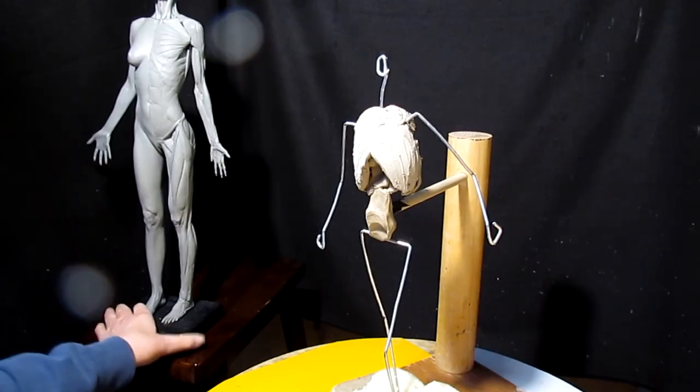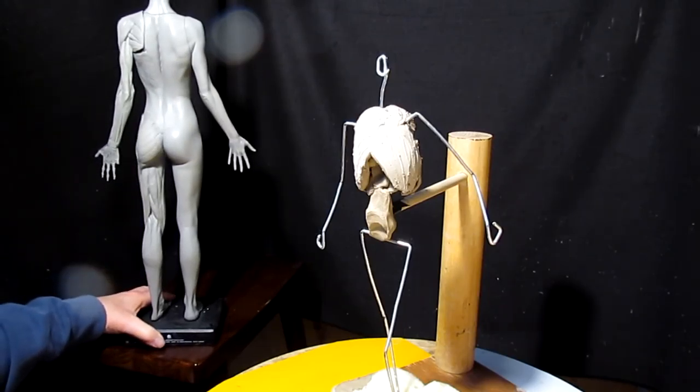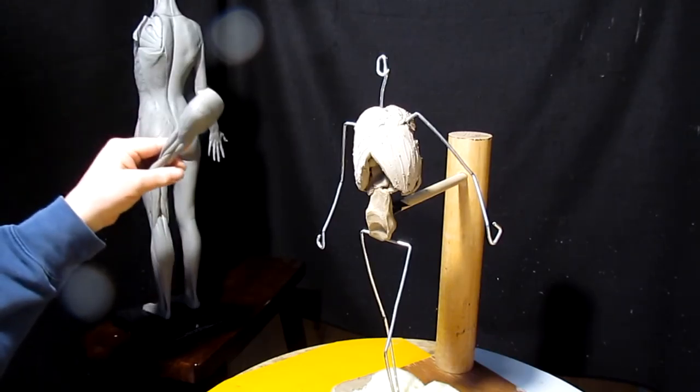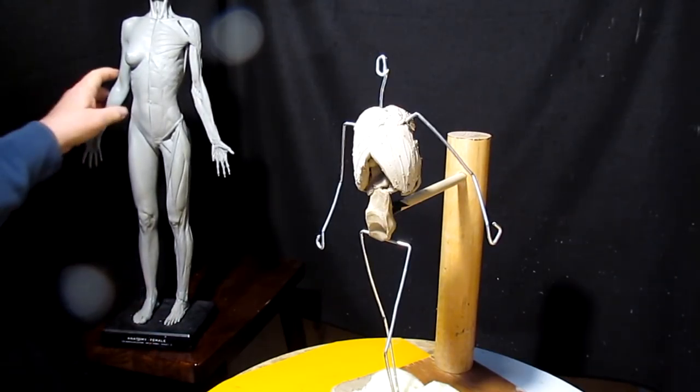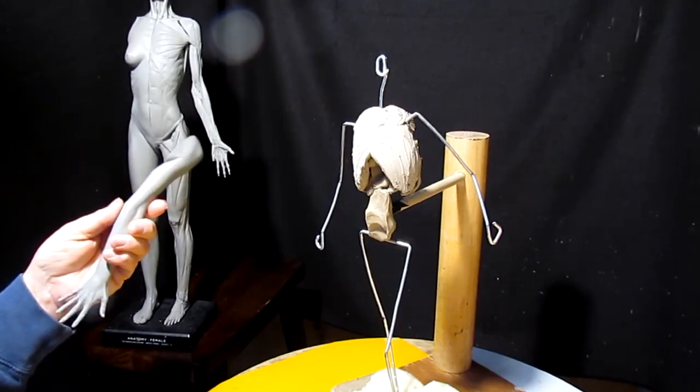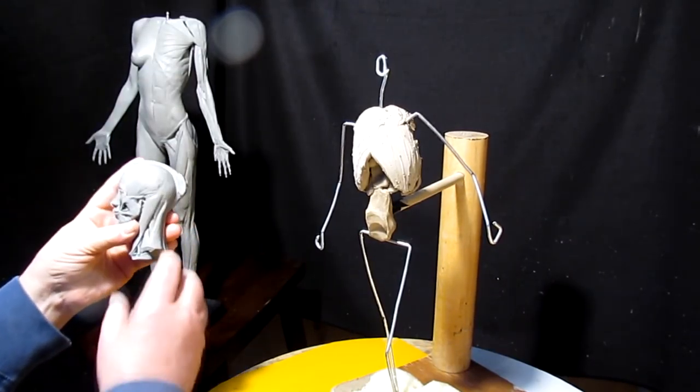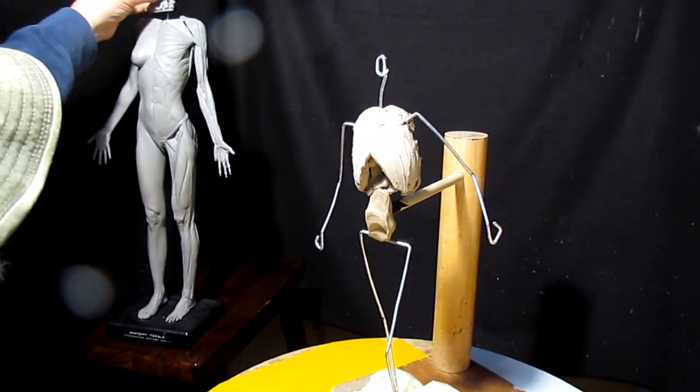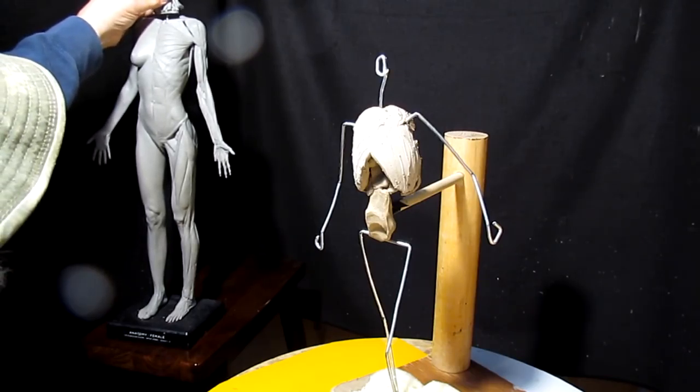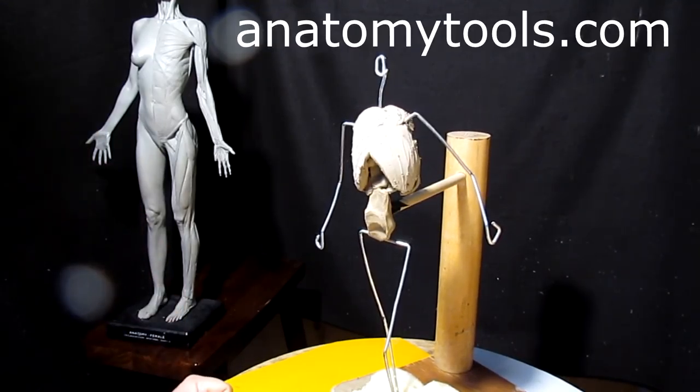This one shows the structure of the arms and stuff like that. It just doesn't have the turntable underneath it like the other one did. You can take the arm off and observe the muscles in the arm. These are extremely helpful for getting arms and heads right. It shows the structure of the head and everything like that, muscle-wise, and it goes right back on. It's held on with magnets. I got these from a company called AnatomyTools.com.